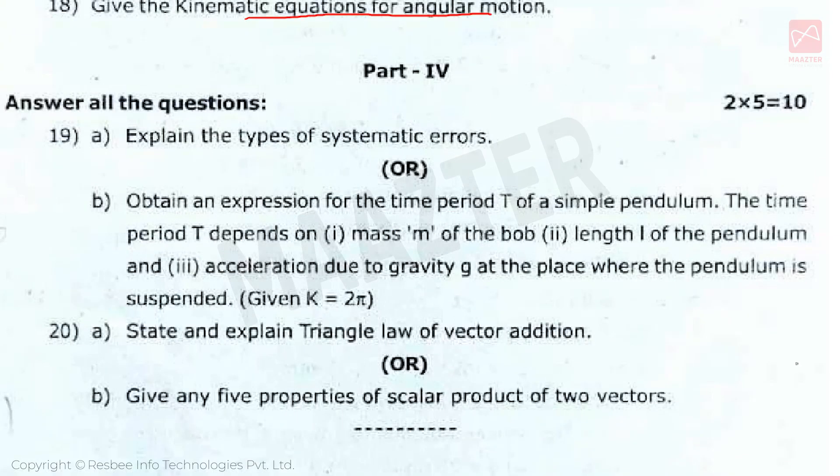Next is Part 4, 5 mark questions. This section has either-or options given. First question: Explain the types of systematic errors. 5 types are there, so you must explain all 5 types.